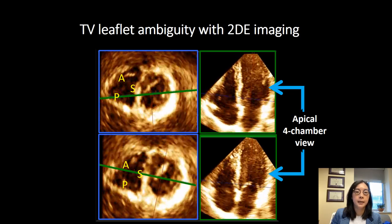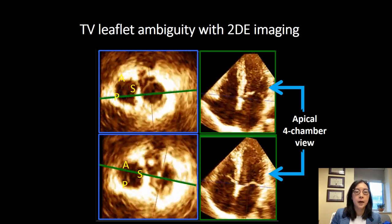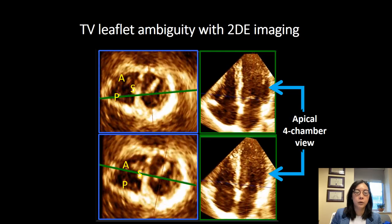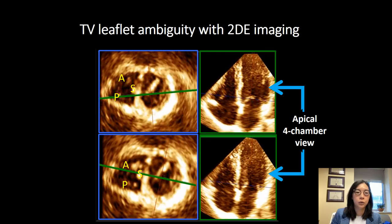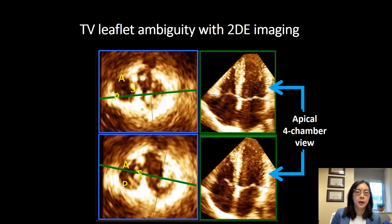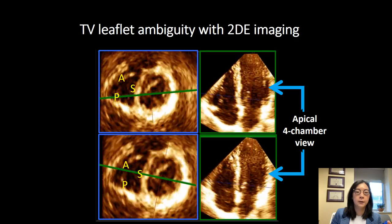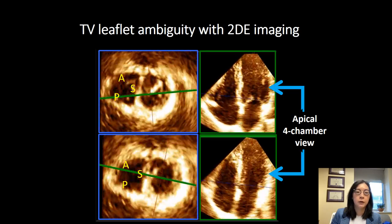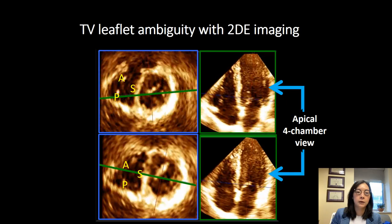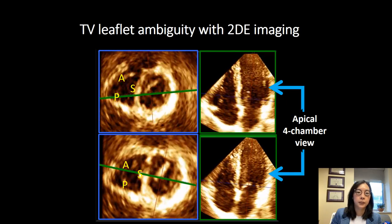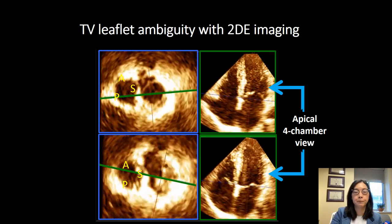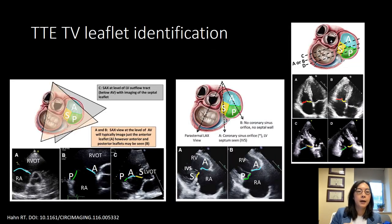Here is a 3D dataset that has been cut to show a four-chamber view. On the top four-chamber view, you're actually cutting through the septal and posterior leaflets, whereas on the bottom four-chamber view, you're actually cutting through the anterior and septal leaflets. In both views, it would be very difficult to identify which leaflet is which. You actually have to look at the structures surrounding the tricuspid valve leaflets to make sure you're identifying it correctly.